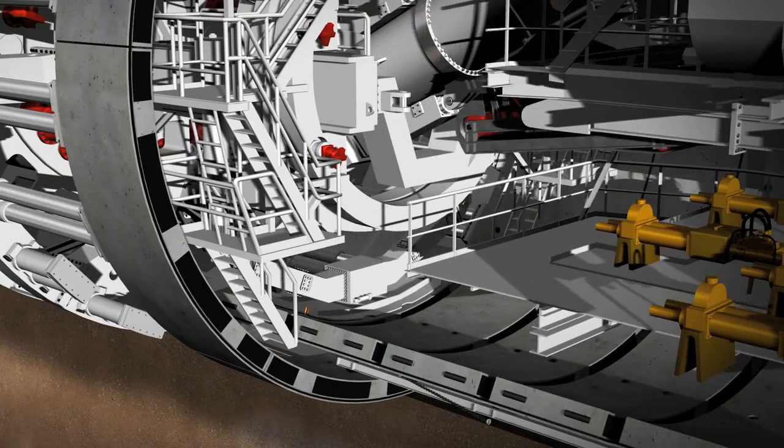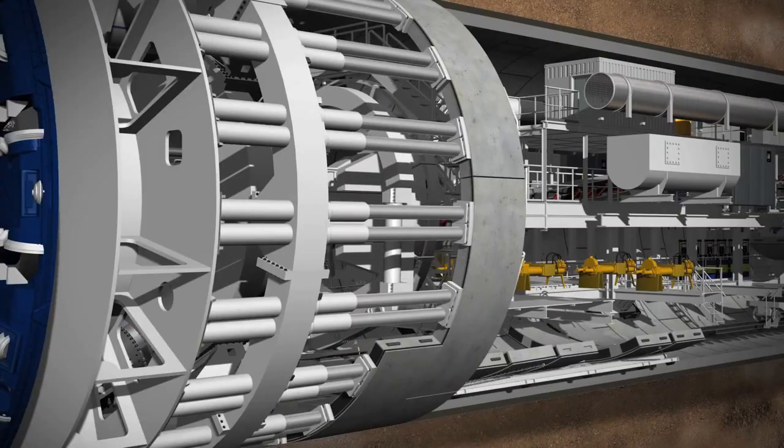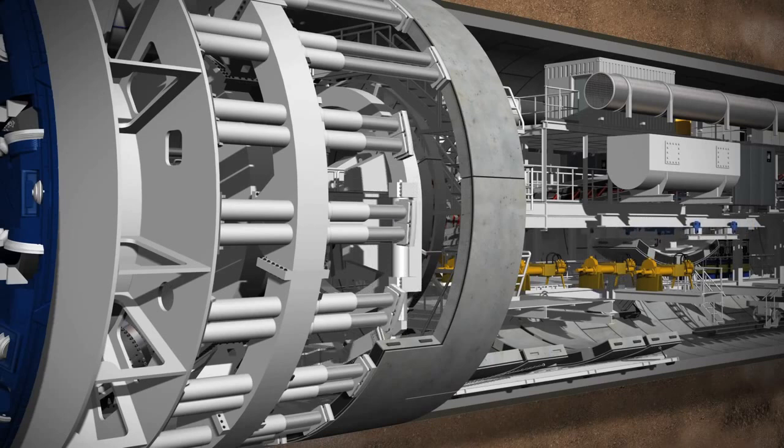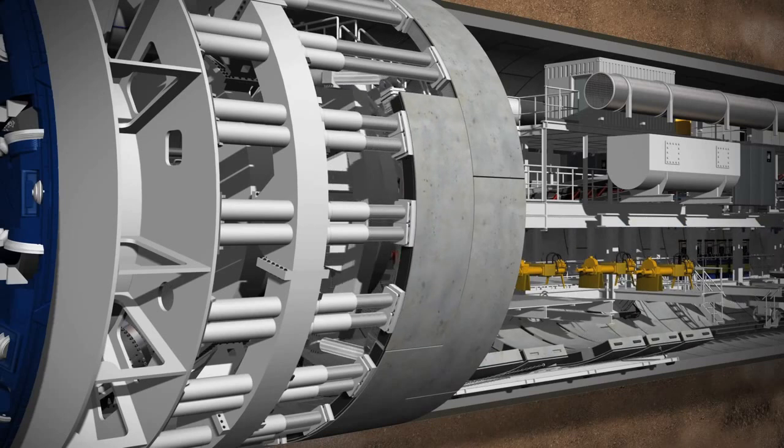The concrete segments are fed in by the segment feeder and lifted into place using a vacuum. The hydraulic cylinders are temporarily retracted in order to provide enough space for the new segment.